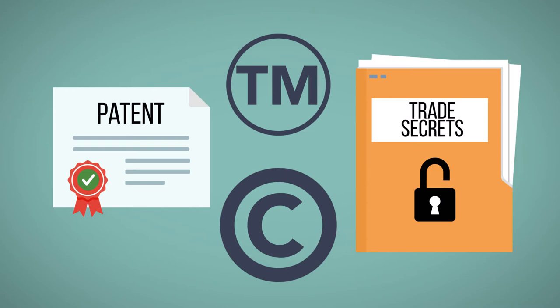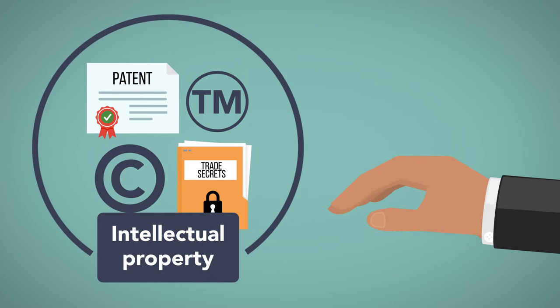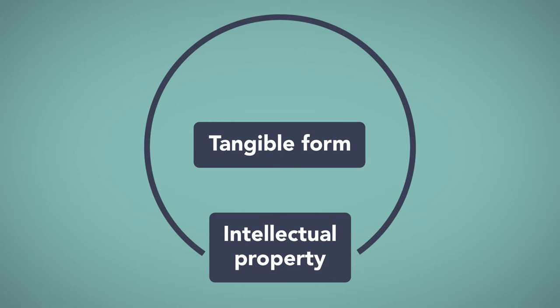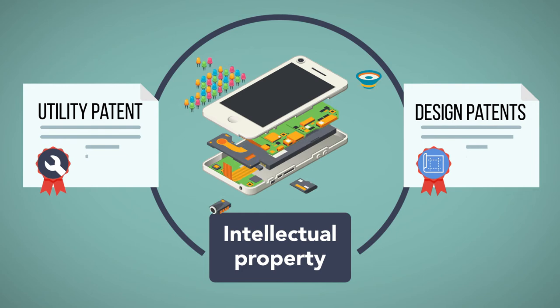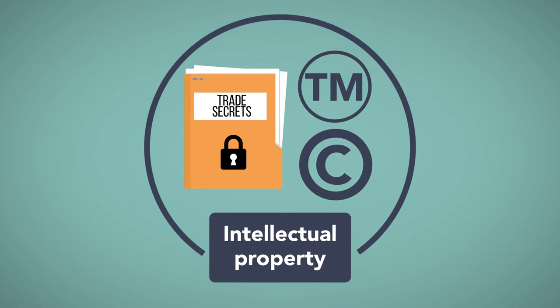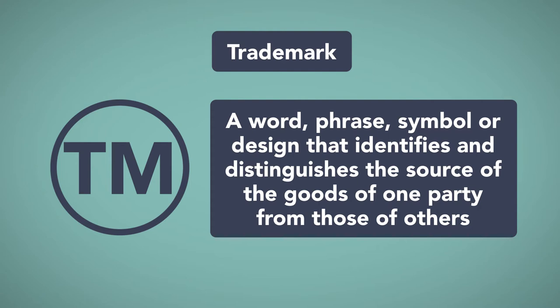Patents, trademarks, copyrights, and trade secrets are all forms of intellectual property. Unlike real property or goods, intellectual property is intangible. However, intellectual property is often distributed in a tangible form, such as a DVD that contains a copyrighted movie, or a mobile phone that is covered by both utility and design patents. An understanding of the other three types of intellectual property is therefore necessary to properly apply patent law.